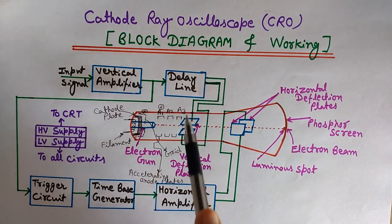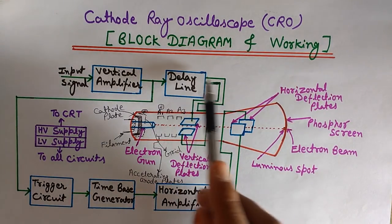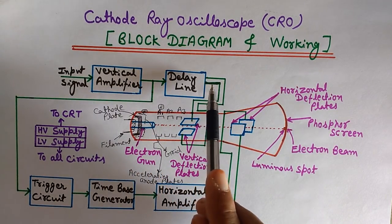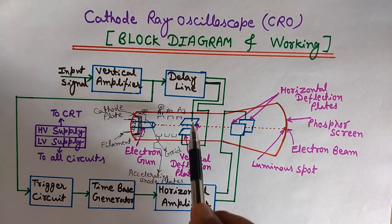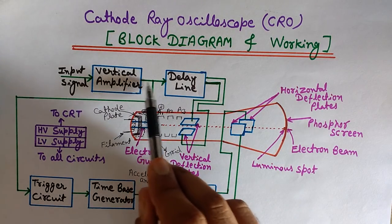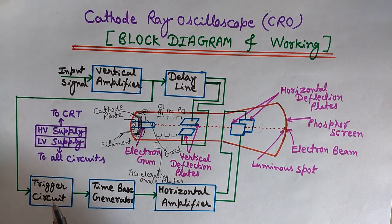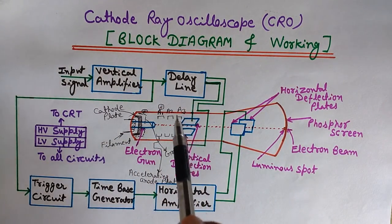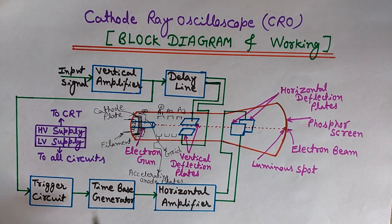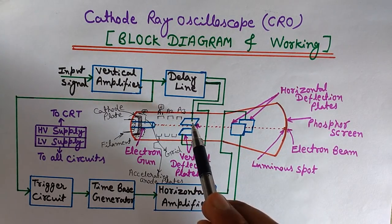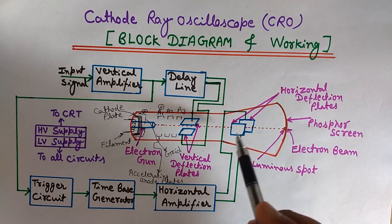A delay line is used here. The output of the vertical amplifier goes to two places: one part goes to this delay line — we do not apply it directly to the vertical deflection plate, we use a delay line first. The other part of the vertical amplifier's output goes to the trigger circuit. The purpose of the delay line is to produce a delay equal to that offered by the trigger circuit and time base generator, because we want the signal to reach both deflection plates at the same time.